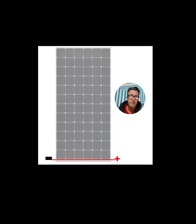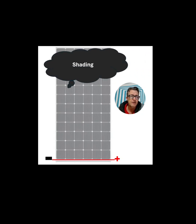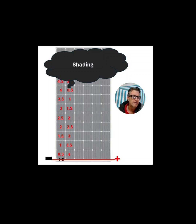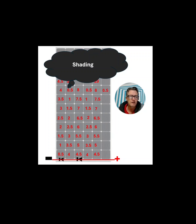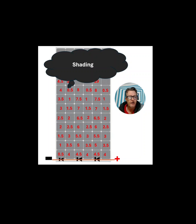The next scenario is where we get shading all over the panel - this is not good. It goes up, hits the shading, comes back. The next string tries to pick up but it hits shading and drops to zero again - a diode is needed. Then the next one tries to go and hits shading too. At the end of the day there's a problem and all three diodes kick in to handle the current flow.